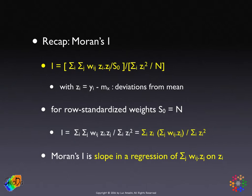This is not what is typically thought of, which is the regression of the value at a location (zi) on its neighbors through the spatial lag. It's the reverse: the spatial lag is on the left-hand side of the equation and the variable is on the right-hand side.